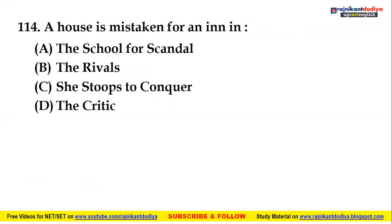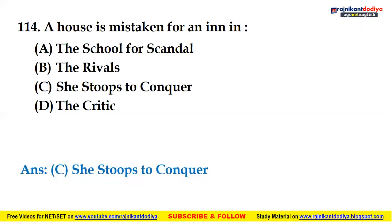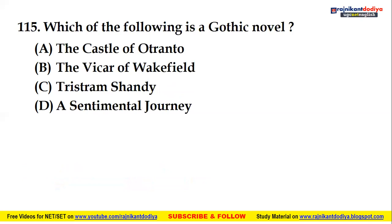The next question: in which of the following works is a house mistaken for an inn? The options are The School for Scandal, The Rivals, She Stoops to Conquer, and The Critic. The right answer is option C — She Stoops to Conquer — in which a house is mistaken for an inn.